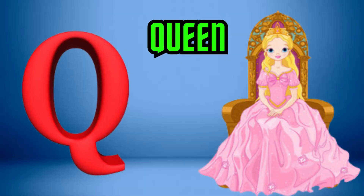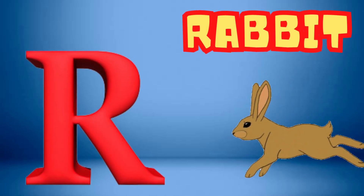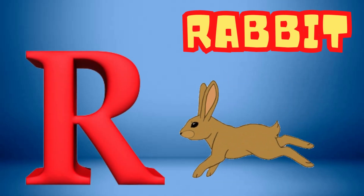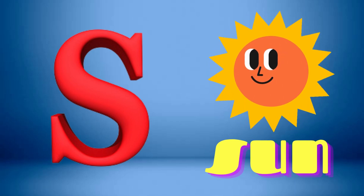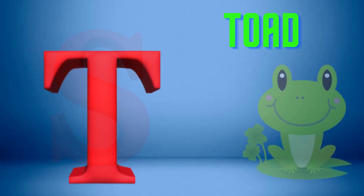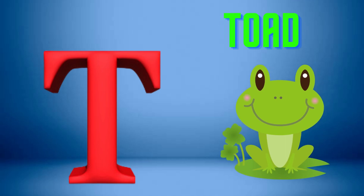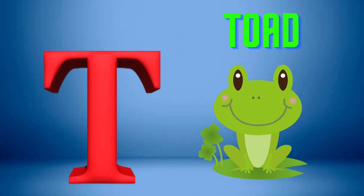Q is for Queen, Q-Q-Queen. R is for Rabbit, R-R-Rabbit. S is for Sun, S-S-Sun. T is for Toad, T-T-Toad.